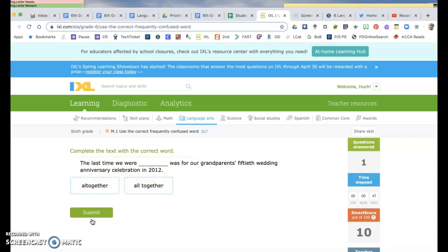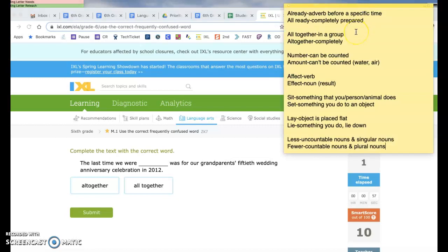The last time we were all together was for our grandparents' 50th wedding anniversary celebration in 2012. I get this one confused, so let's look. Two words means in a group. All together means completely. So if I have it as one word...